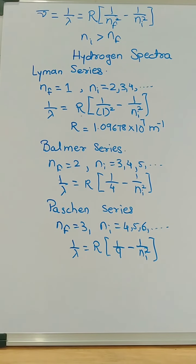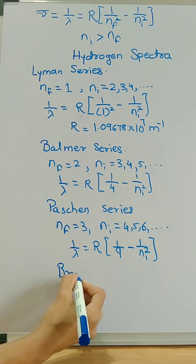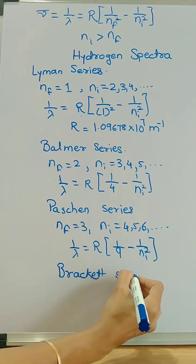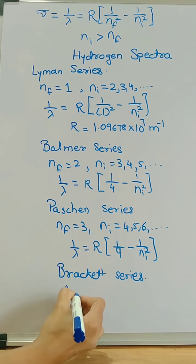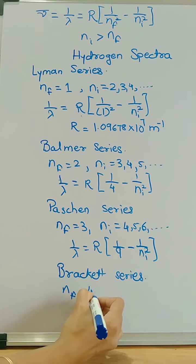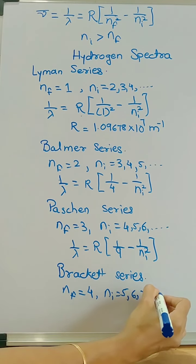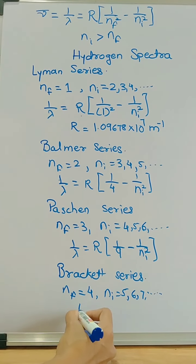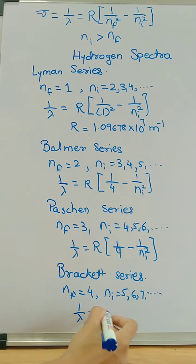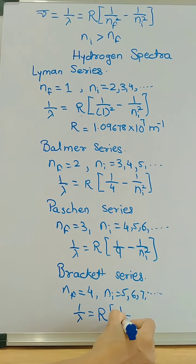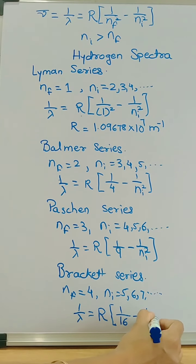So we have Lyman, Balmer, Paschen, and the next series is the Brackett series. For Brackett series, nf is 4 and ni is greater than 4. The equation becomes 1/λ = R × (1/16 − 1/ni²).